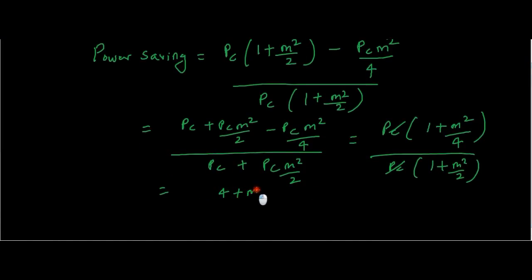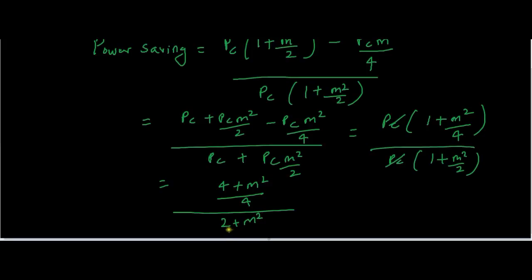(4 + m²)/4 upon (2 + m²)/2. This will be (4 + m²) upon 2(2 + m²). So this is the power saving of SSB modulation.